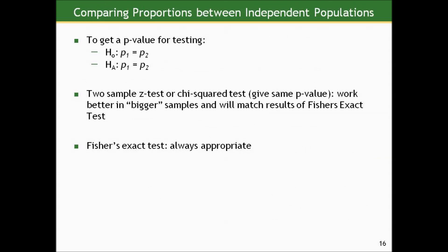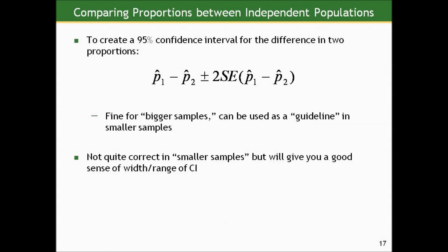So just to summarize, how do we compare proportions between independent populations? Well, to get a p-value, the two-sample z-test or chi-squared test works better in bigger samples and will match the results of Fisher's exact test. But Fisher's exact test is always appropriate regardless of the size of our samples. To create a 95% confidence interval regardless of the size of our samples, the best we can do is what we've been doing. Take the observed difference in proportions and add or subtract two standard errors. Great for bigger samples and can be used as a guideline in smaller samples. Not quite correct in smaller samples, but will give you a good sense of width and range in the CI. So from your perspective, anything I give you, it's okay to do this. And it's okay to use Fisher's exact test to get a p-value or even the chi-squared. So don't worry so much about what's big and what's small. Just recognize Fisher's exact test as another approach to comparing proportions. And know that we don't have a small sample correction for creating a confidence interval on the difference in proportions.